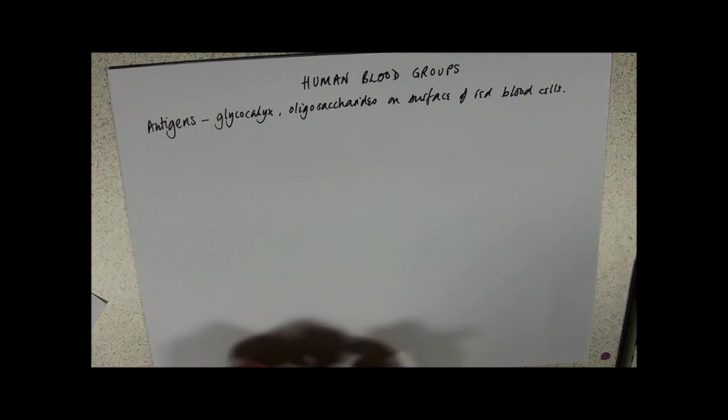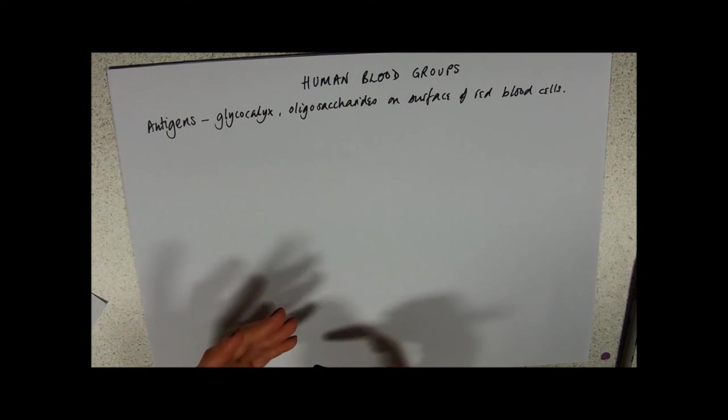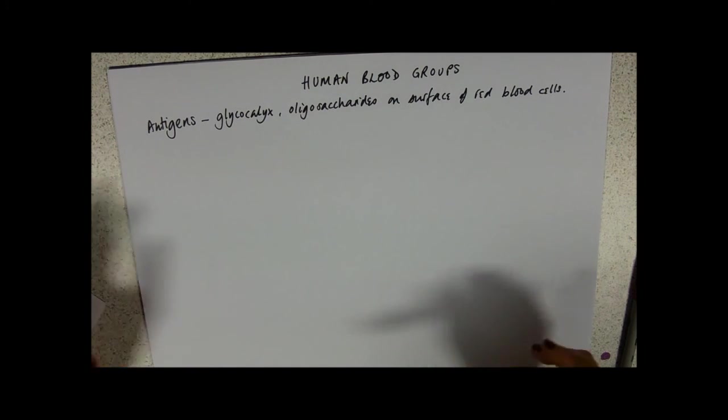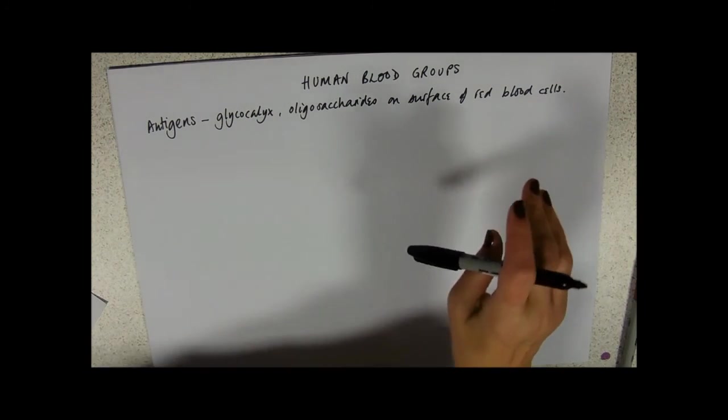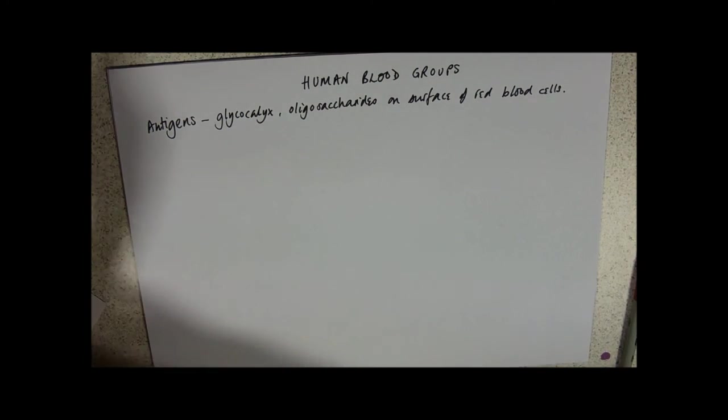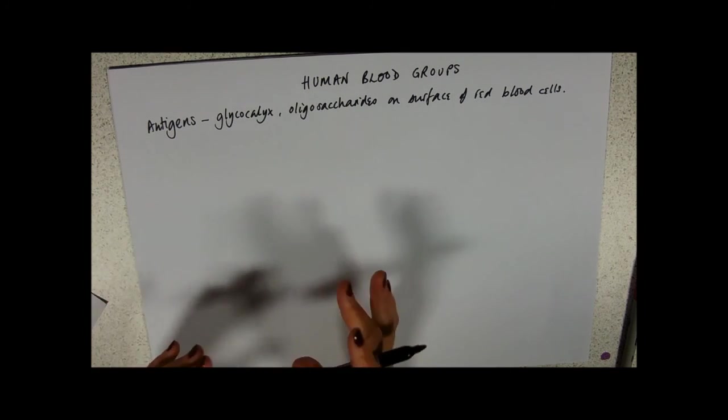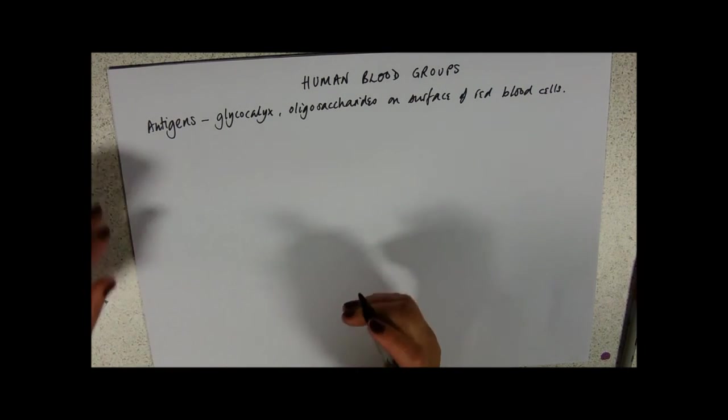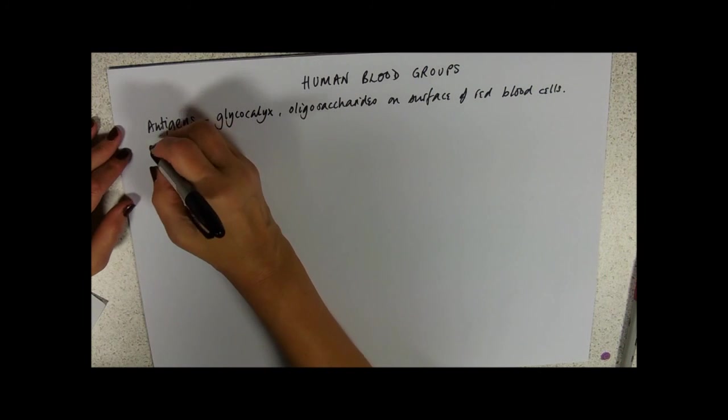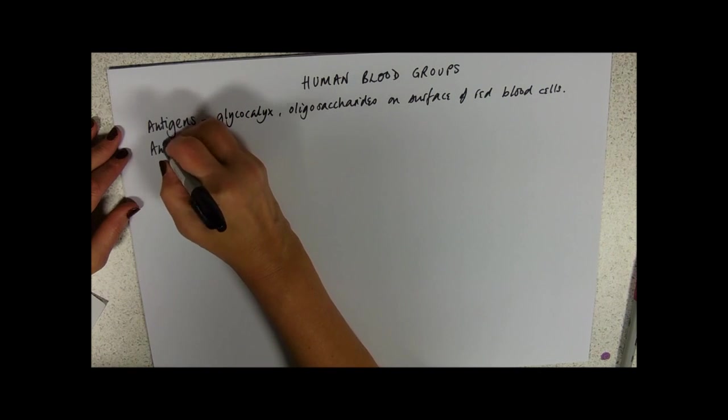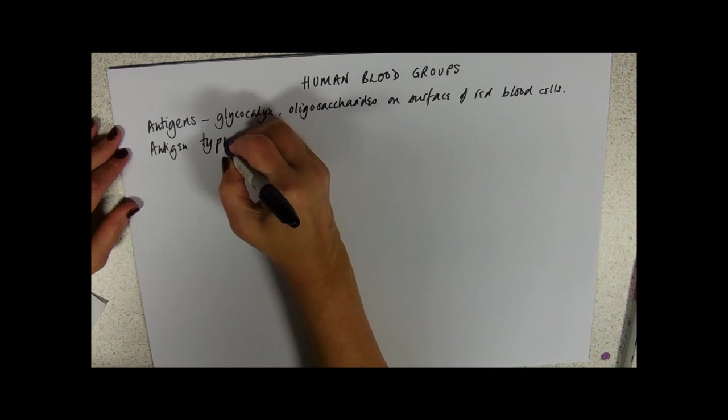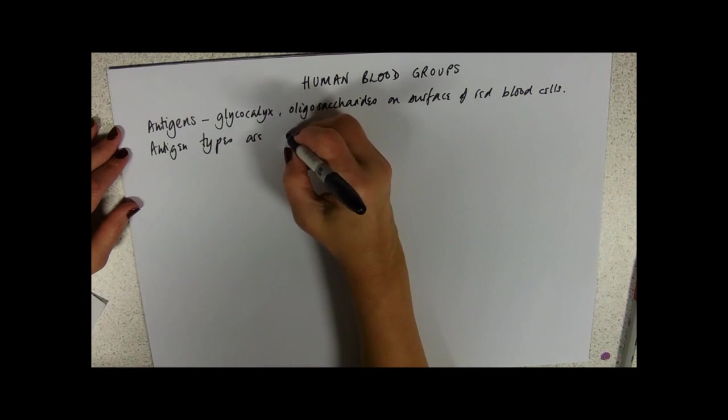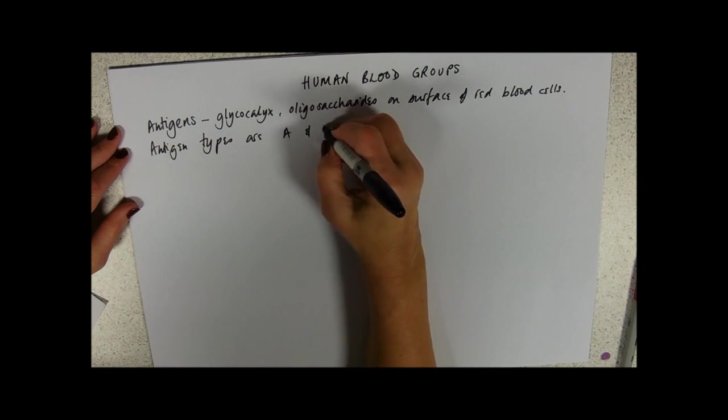And these are a good example of having three alleles that control the traits, the characteristic of which you only have two at a time, obviously. But also of co-dominance and recessiveness. So our antigens, our antigen types are A and B.